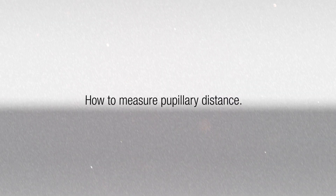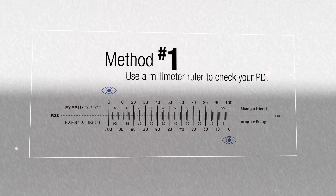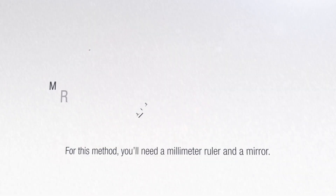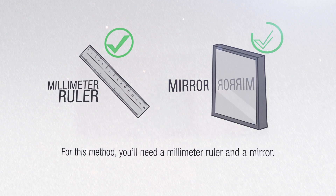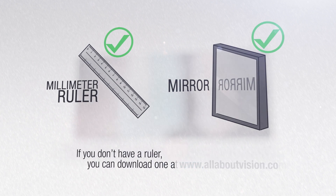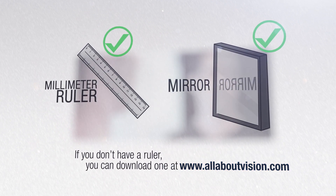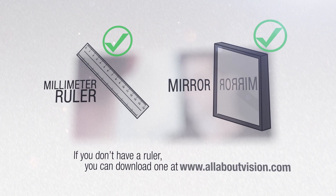How to measure pupillary distance? Method number one: use a ruler to check your PD. For this method, you will need a millimeter ruler and a mirror. If you don't have a ruler, you can download one at www.allaboutvision.com.